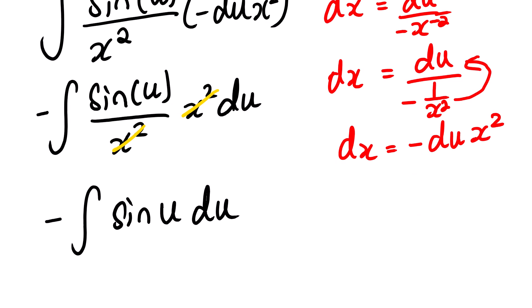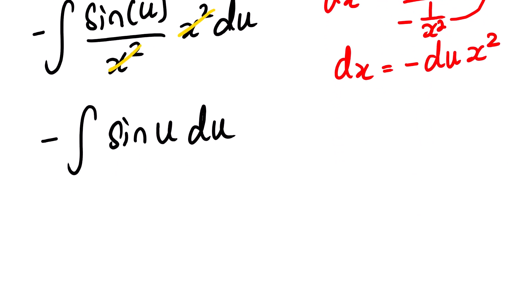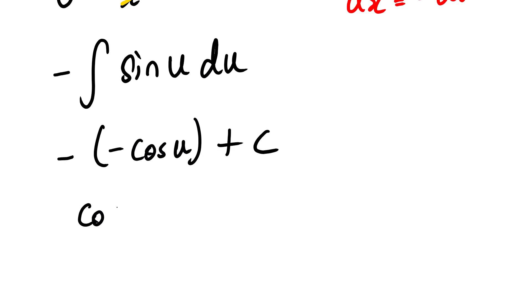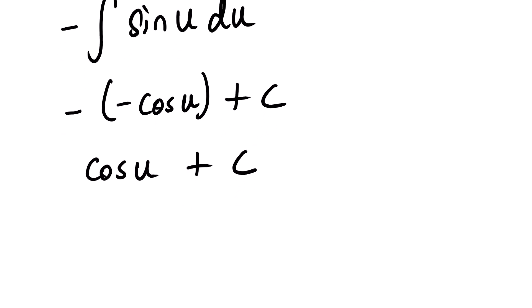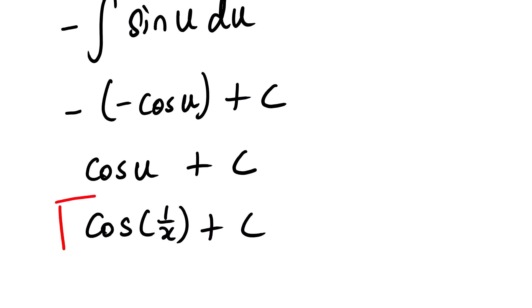We know that the integral of sine is negative cosine, since the derivative of cosine is negative sine. So negative times negative gives us positive cosine u plus C. Now we said u equals 1 over x, so substituting back we get cosine of 1 over x plus C. We are done with this question.